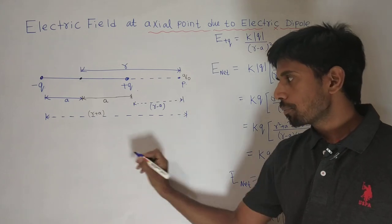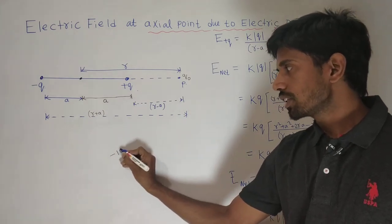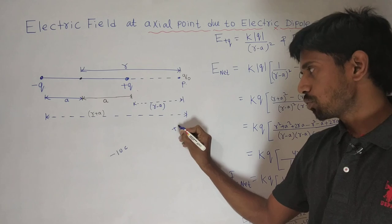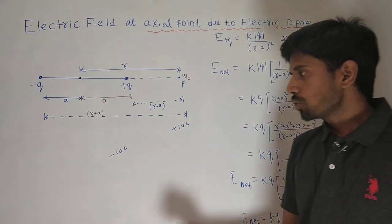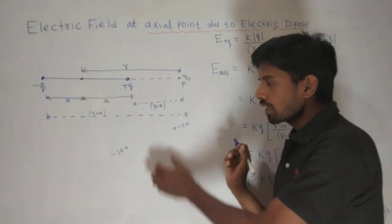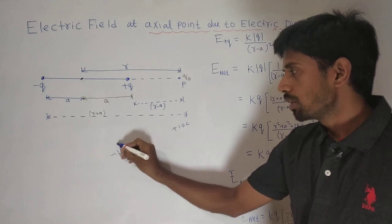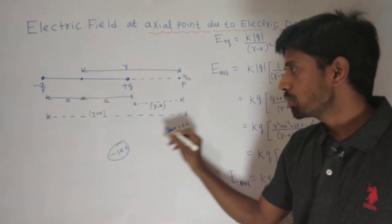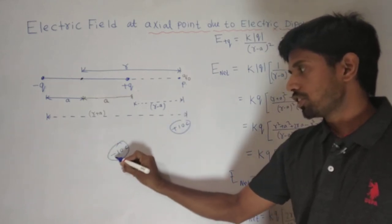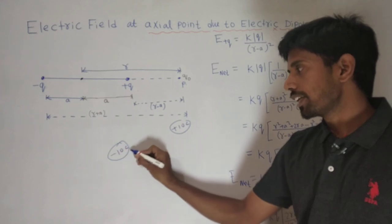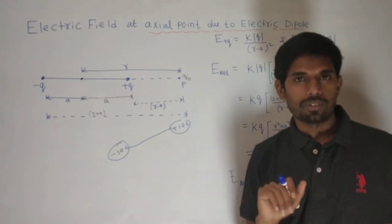So what does dipole mean? For example, suppose you have a minus 10Q charge and a plus 10Q charge. So what is this forming? It is forming a dipole. Both have the same magnitude, but they are opposite in nature — that is, one is negative and another one is positive. This is a dipole.